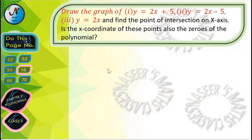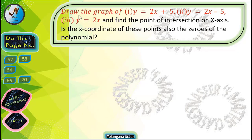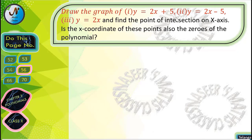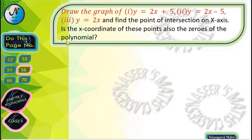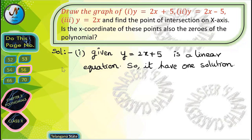In this session we are going to solve 'Do This' page number 56, chapter 3 Polynomials. In this problem it is given to draw the graph of y = 2x+5, second one y = 2x-5, and third one y = 2x. Find the point of intersection on the x-axis; the x-coordinates of these points are the zeros of the polynomial.